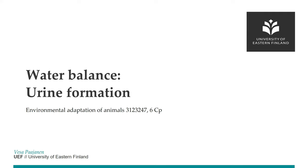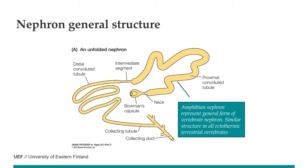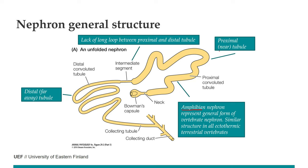Welcome to this lecture on urine formation and how we regulate it in different vertebrates. This is a general nephron structure of a vertebrate. It's not looking the same as in the textbooks - it's an amphibian nephron, and the same structure is also in lizards, snakes, etc. There are only two parts: the proximal tubule and the distal tubule, with a very short intermediate segment between them - not the long loop we learned from textbooks.